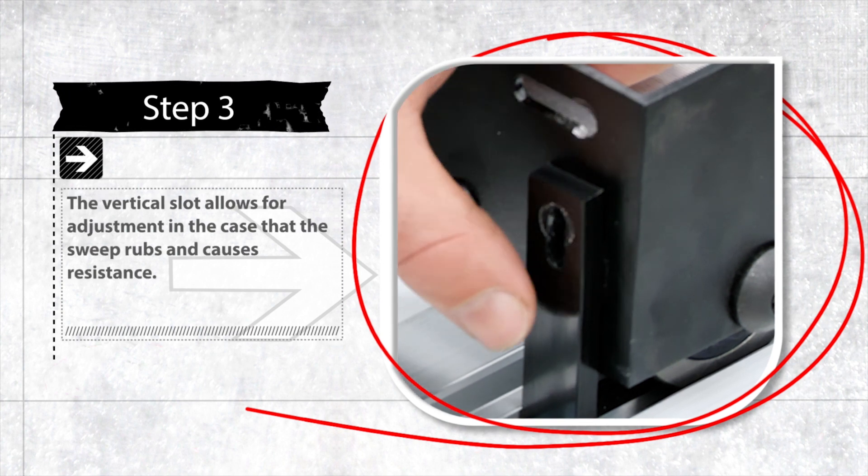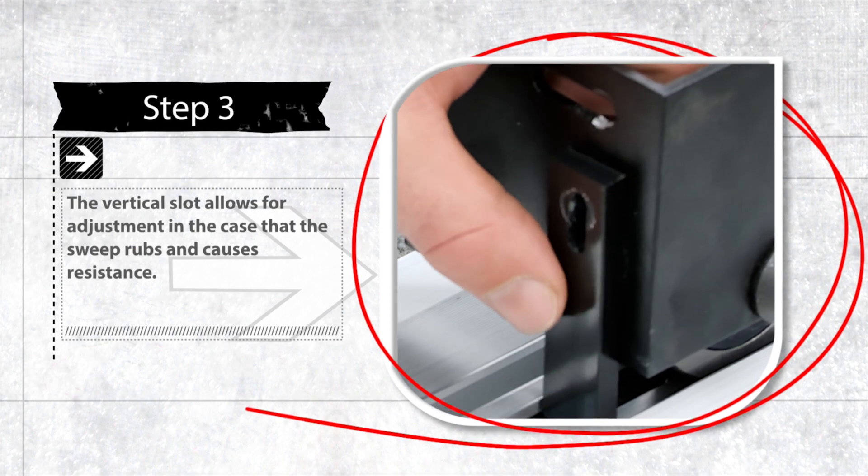The vertical slot allows for adjustment in the case that the sweep rubs and causes resistance.